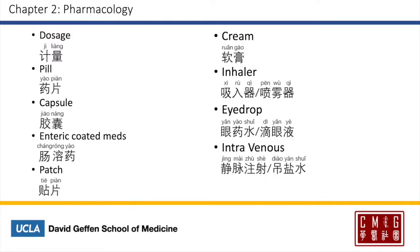Dosage of a medication is 剂量, and a capsule is 膠囊. Enteric-coated medications will be 肠溶药 — 溶 meaning to dissolve. A patch will be 贴片 — 贴 meaning to stick or sticky. Cream will be 软膏. An inhaler is 吸入器, or another common term is 喷雾器 — 雾 meaning a mist, and 喷 meaning to spread. Eye drops are 眼药水 or 滴眼液 — both are commonly accepted.